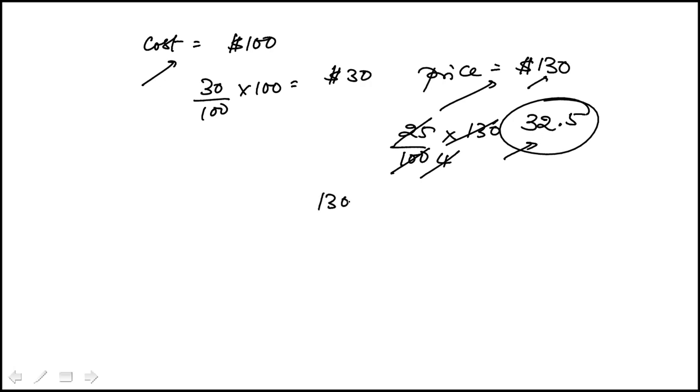And I'm going to subtract that from $130 and it's going to give me $97.50. So that would be the discounted price, which is choice A.